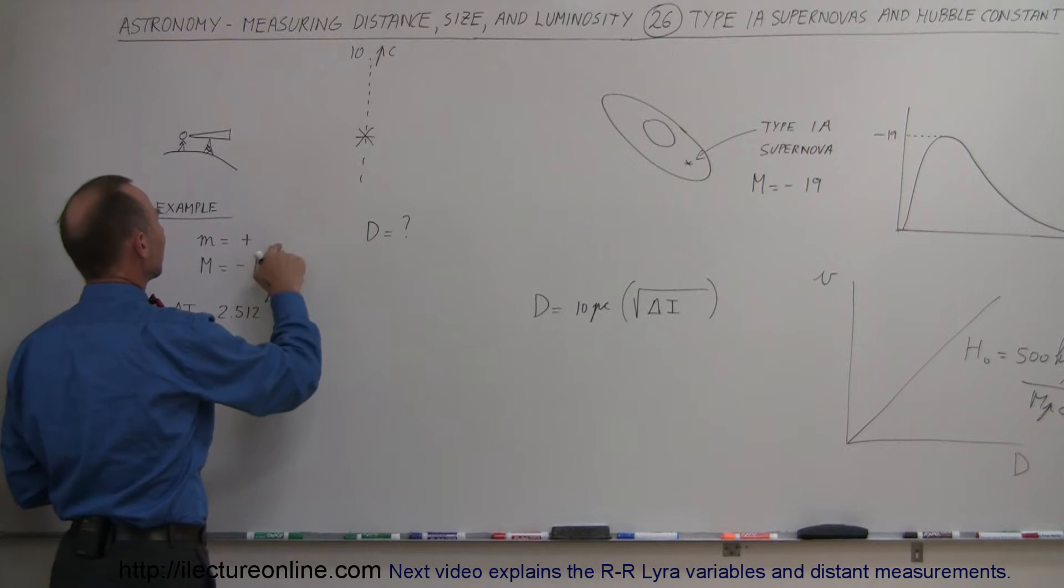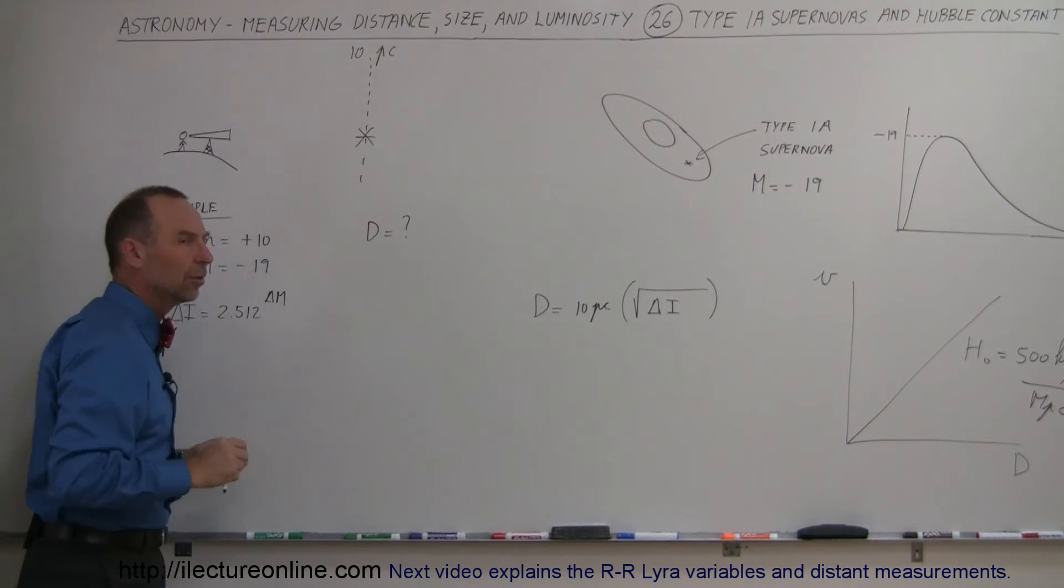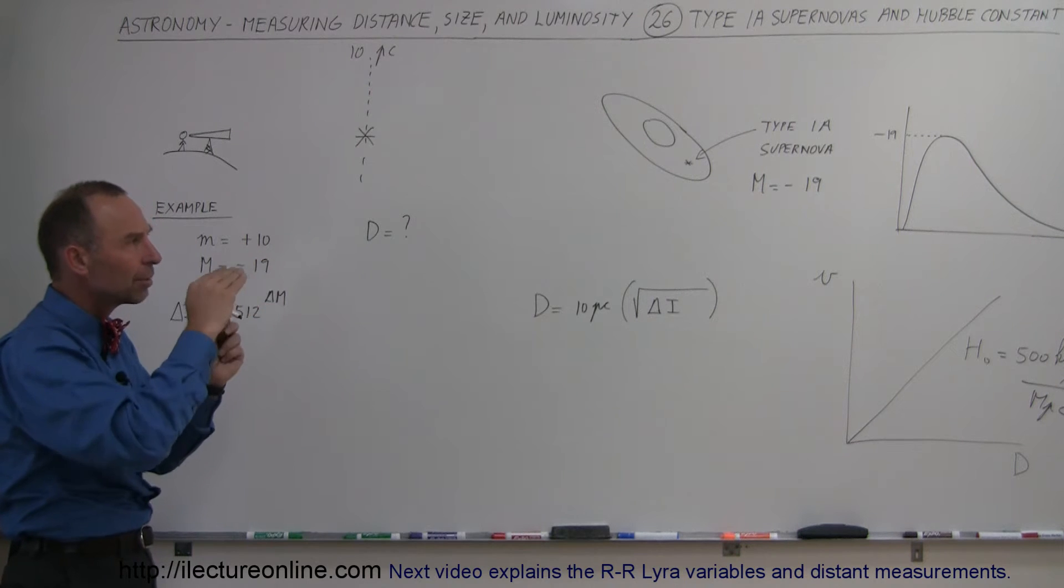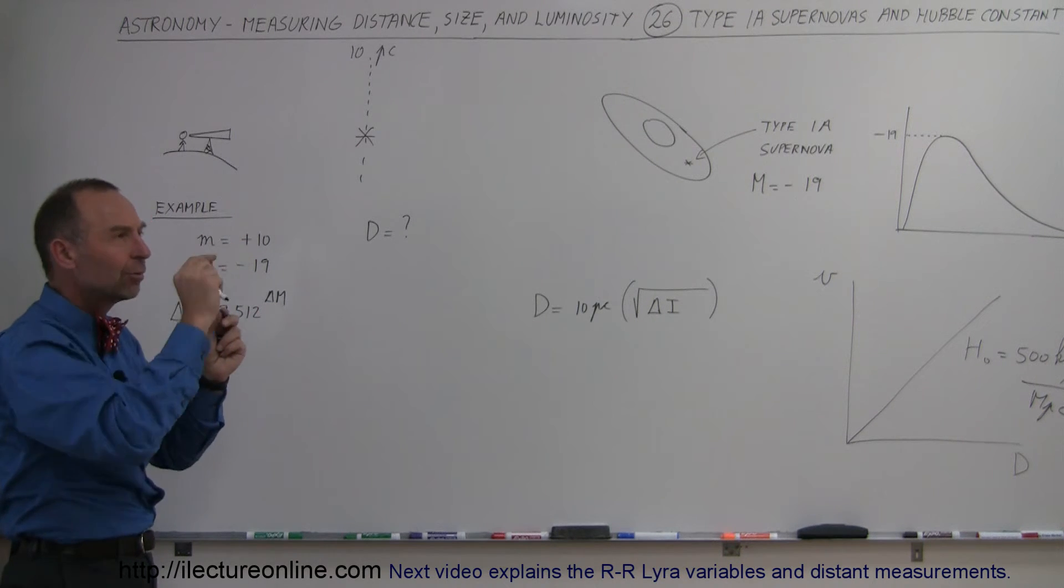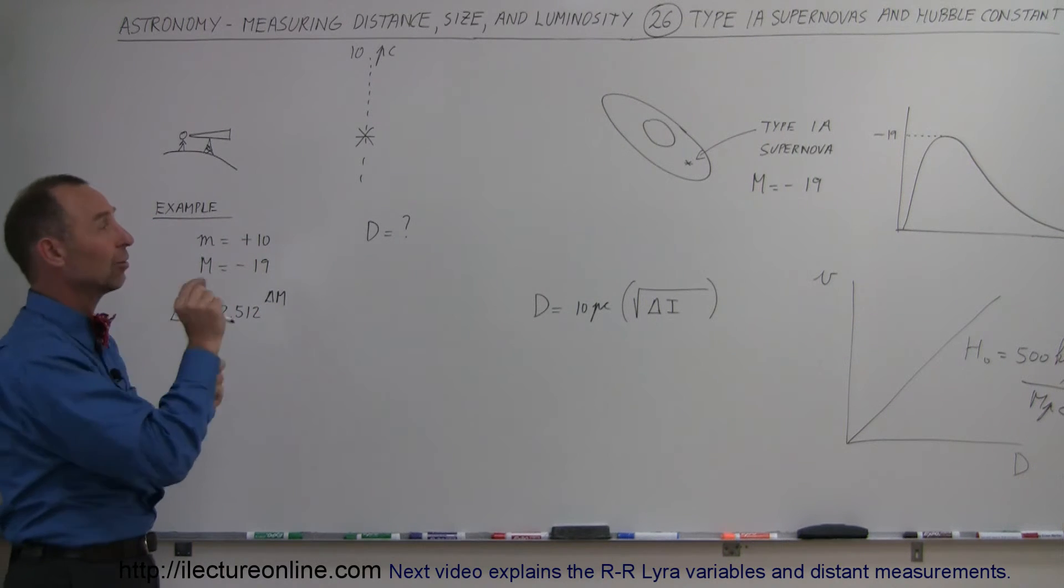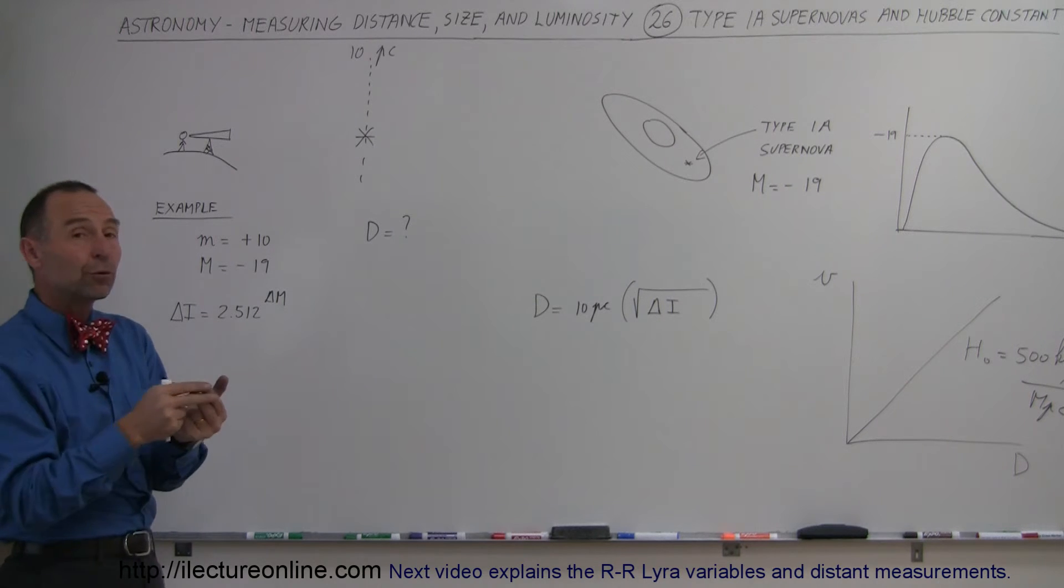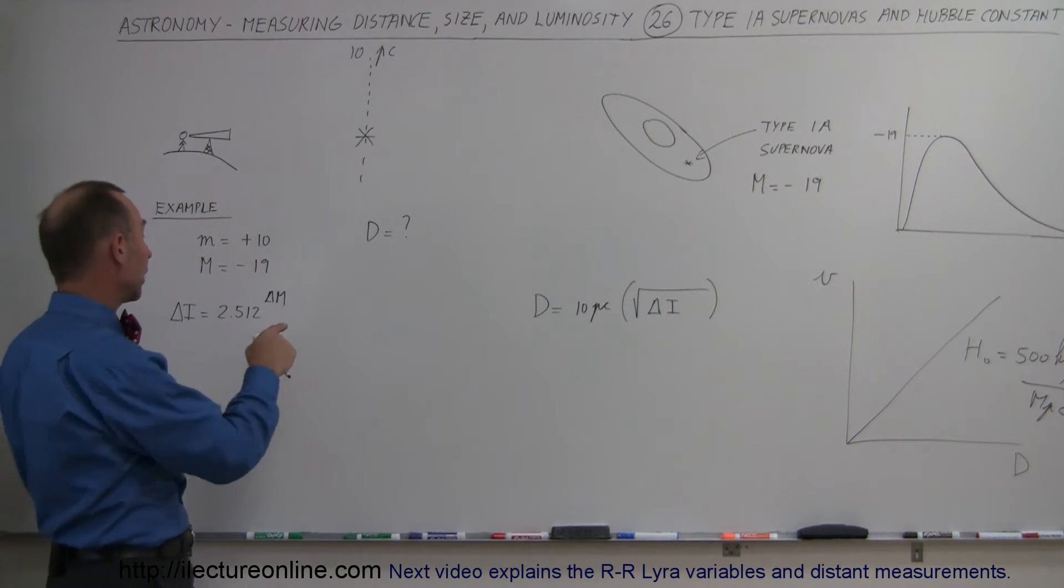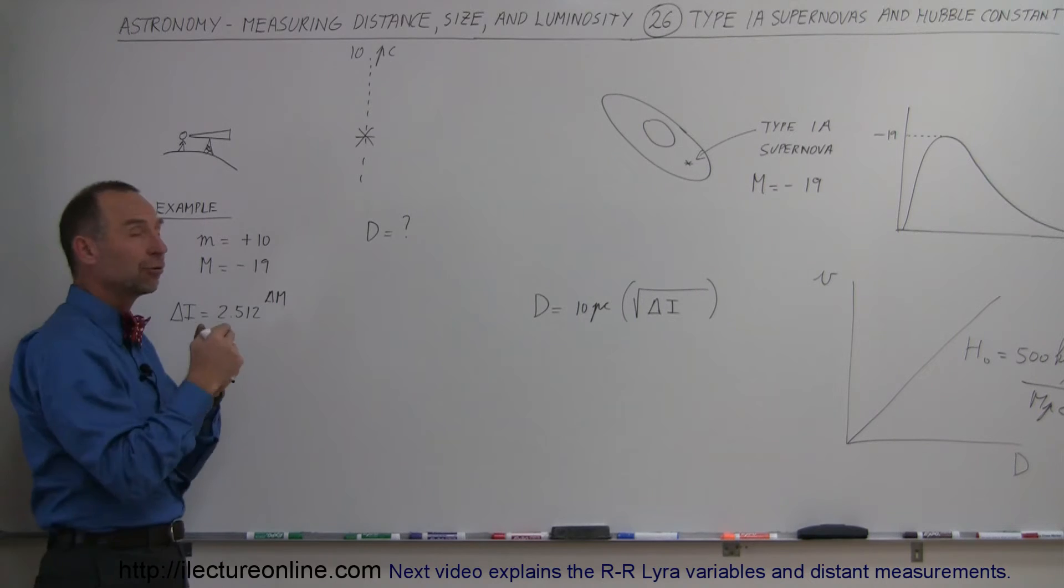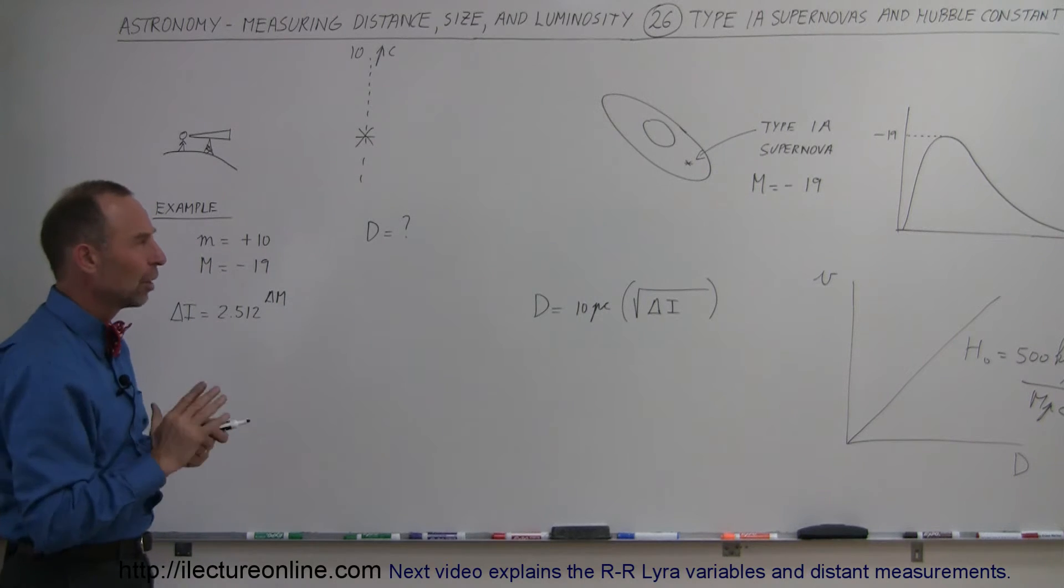Let's say we have an apparent brightness of about plus 10. So that means we were looking at it with a telescope. We kept measuring it and measuring it. We reached its maximum value. We tried to measure the brightness of the galaxy. We then know, of course, that the absolute brightness, the real brightness is minus 19. And then, of course, we simply take the difference.